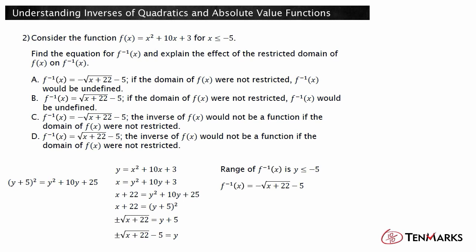Let's look at the answer choices. Only the first and third choices have the correct equation for the inverse. The first choice says an unrestricted domain of f would make the inverse undefined. Choice 3 says an unrestricted domain of f would make the inverse not a function. The correct answer is choice 3. If the domain were not restricted, the inverse would include both the positive and negative square roots, which would make the inverse not a function.